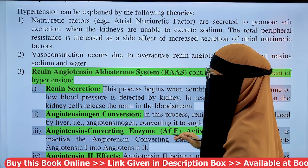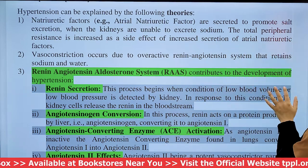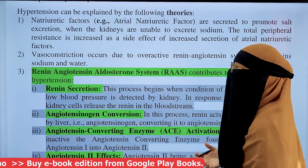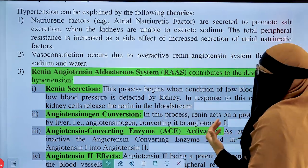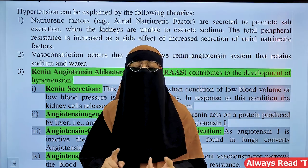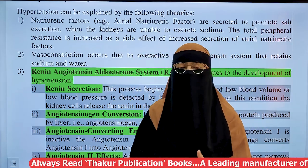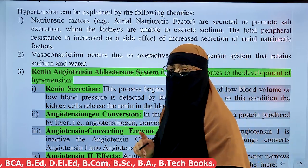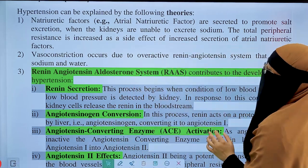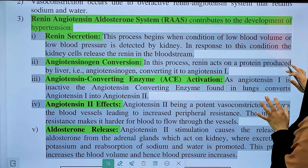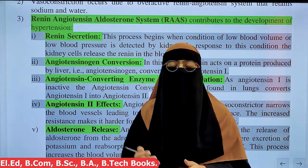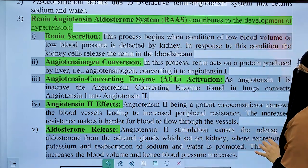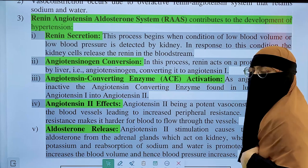Vasoconstriction is another key mechanism. When the renin-angiotensin system, which works to retain sodium and water, becomes overactive, the blood vessels constrict and narrow down, causing hypertension. The most important mechanism is the renin-angiotensin-aldosterone system (RAS).